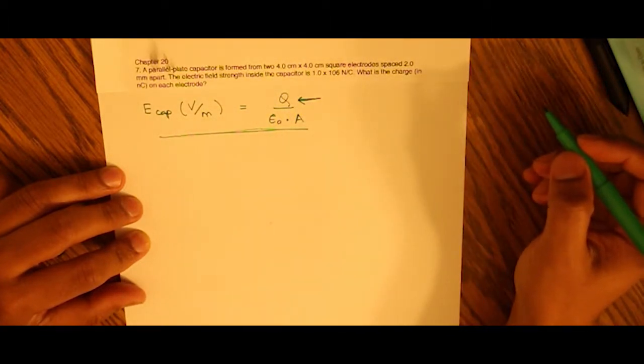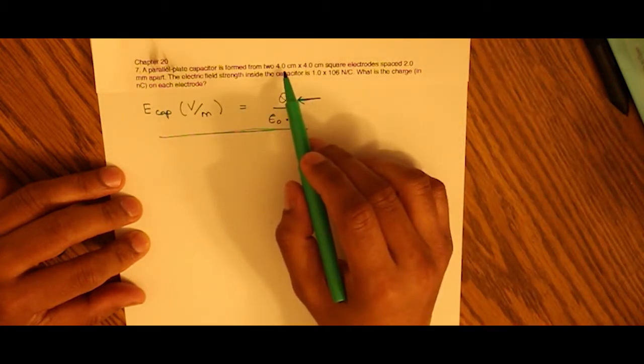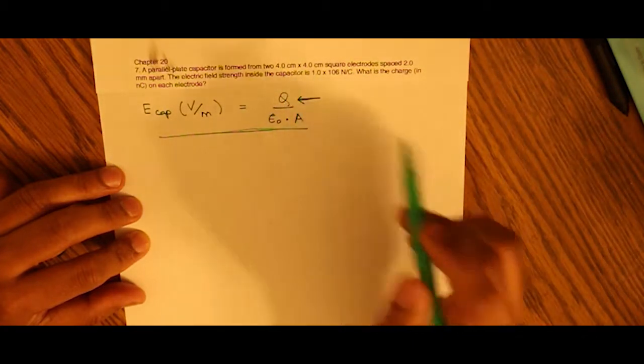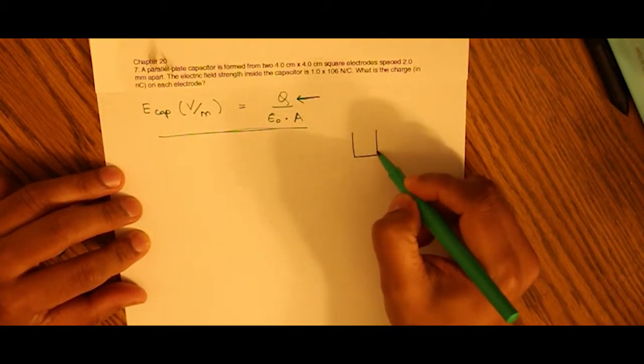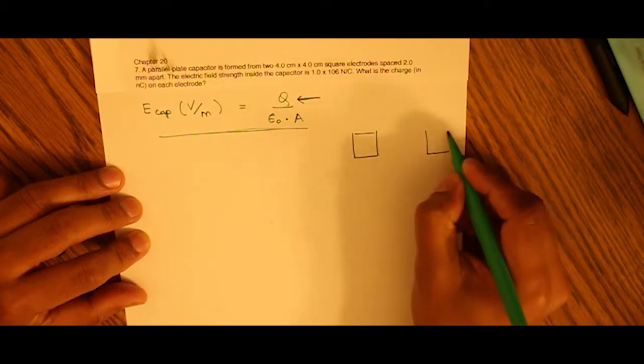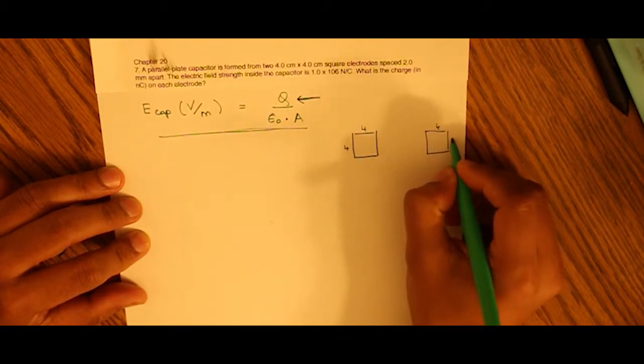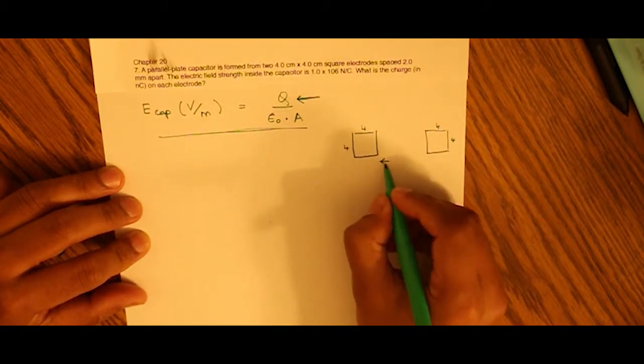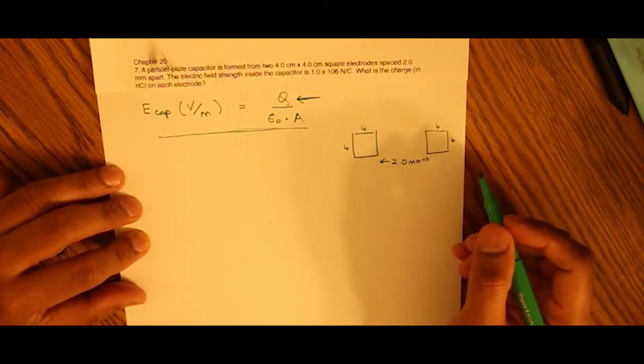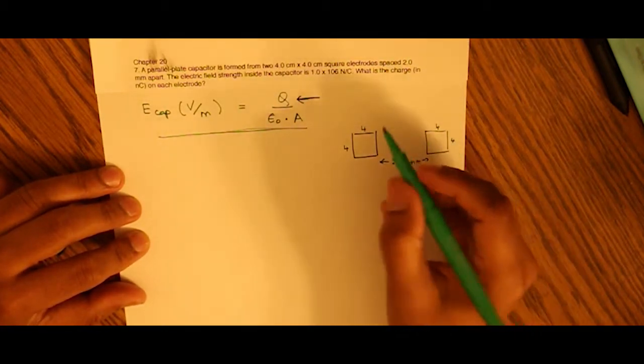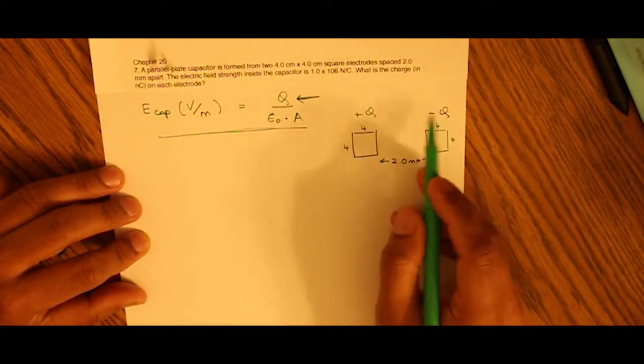The area of the electrodes is 4 cm × 4 cm. If this is one of the electrodes, this is the other, and they are separated by 2 mm distance from one another. We need to find out the +Q and the -Q on each of the electrodes.